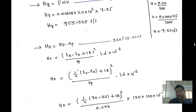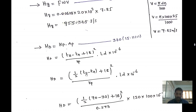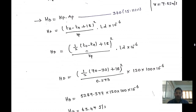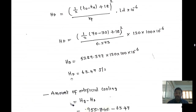To find the heat dissipated, refer to page 360, equation 15.11c. The formula is: Hd = (1/2) × [(T_b − T_a + 18) / k × P]² × L × D × 10⁻⁶, where T_b = 70°C, T_a = 30°C, k = 0.273, P = 1.67, L = 120, D = 100. Calculating gives Hd = 63.47 J/s.